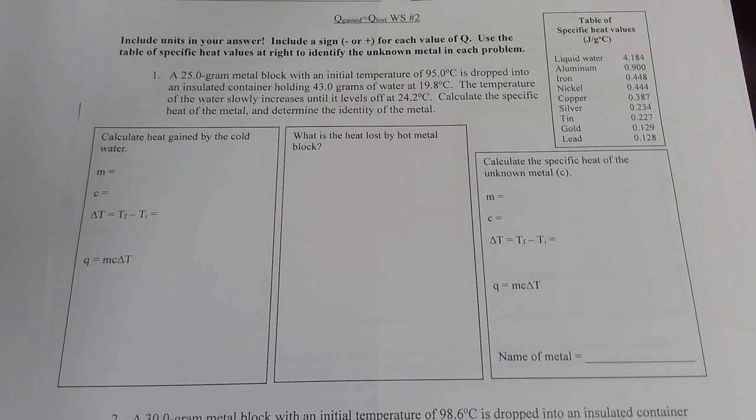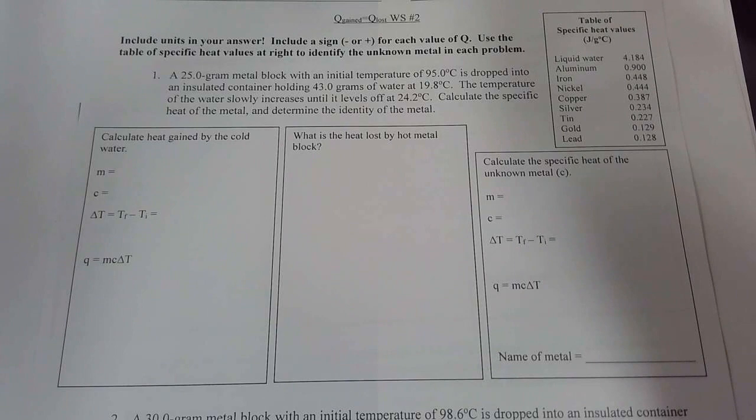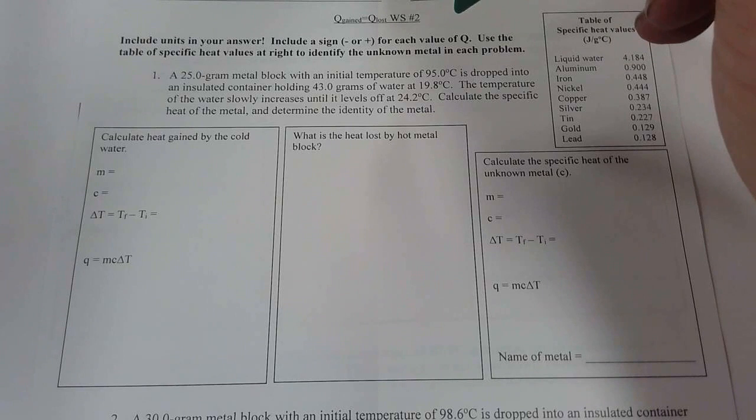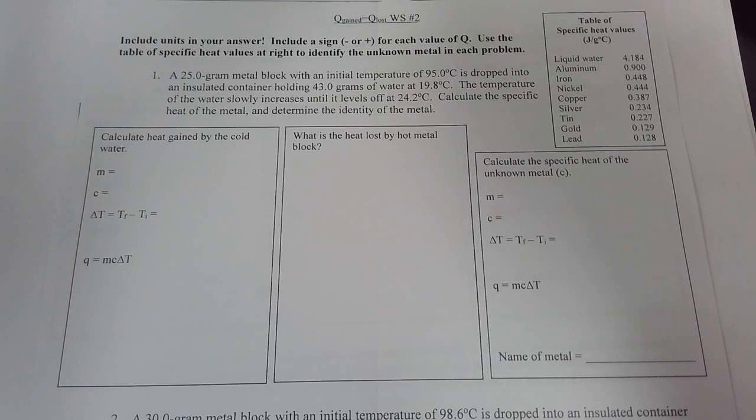As we read, it's telling us that we need to include our units in our answer. We need to include the sign which tells us the directional flow of the energy itself. And we need to find the value of Q. We're using the specific heat values on the right to identify the unknown metal in each one of these problems.